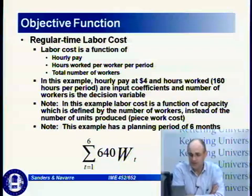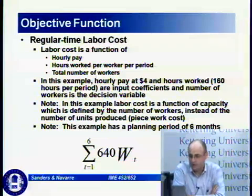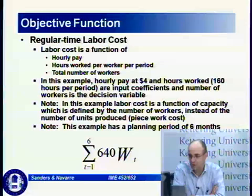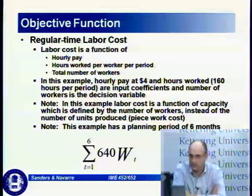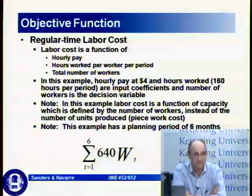The regular time labor cost is a function of hourly pay, the number of hours worked per worker per period, and the total number of workers. In this example, hourly pay is $4 and hours worked are 160 hours per period — that's 40 hours per week assuming four weeks in a month. These are the input coefficients, and the number of workers is the decision variable.